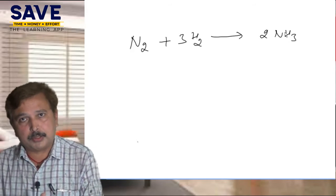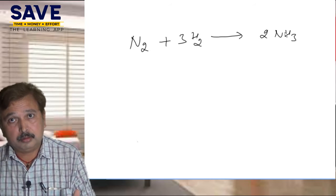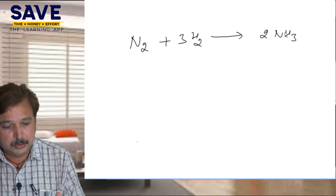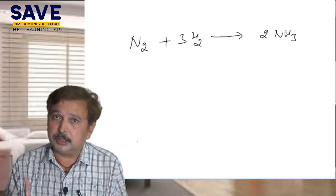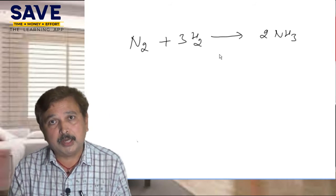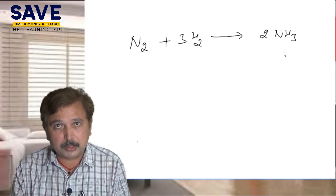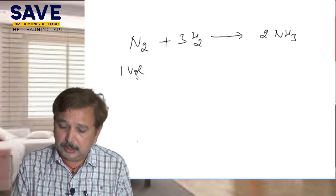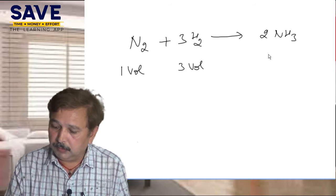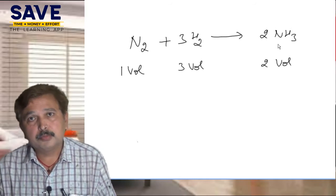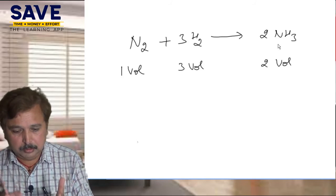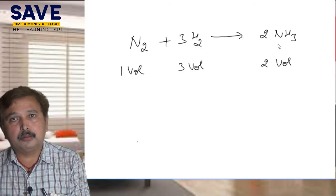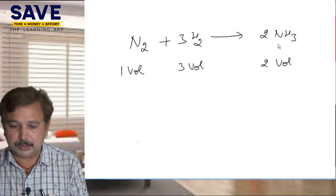Then what will be the ratio between the reactants and the products? It is fixed. The reaction must be balanced first — and it is already balanced. So one volume of nitrogen gas reacts with three volumes of hydrogen gas to give two volumes of ammonia gas. It means if we take one liter of nitrogen gas and three liters of hydrogen gas, we will get two liters of ammonia gas. This is our Gay-Lussac's Law — the last law of chemical combination.